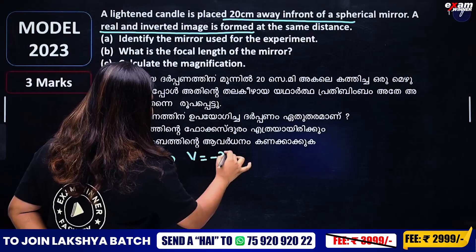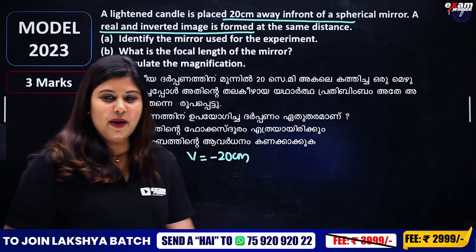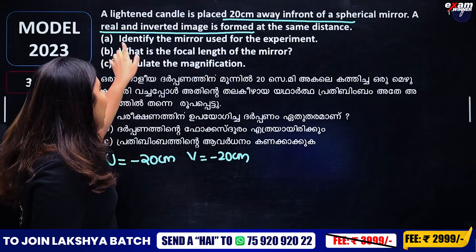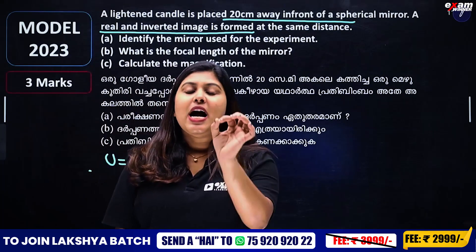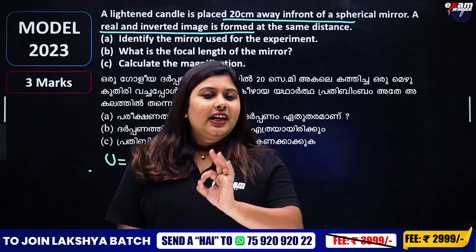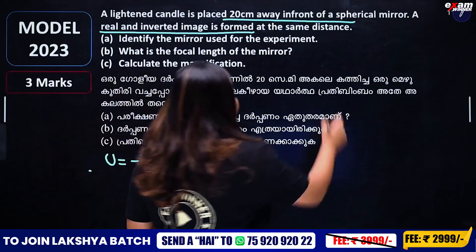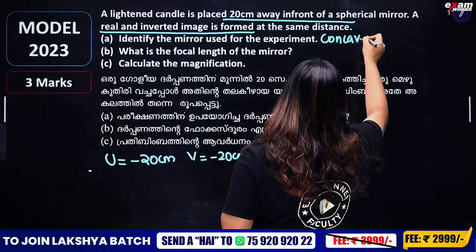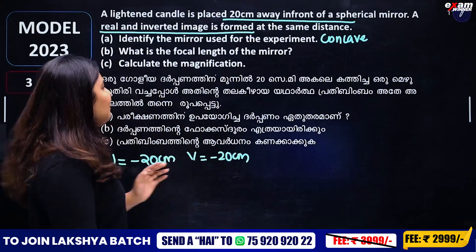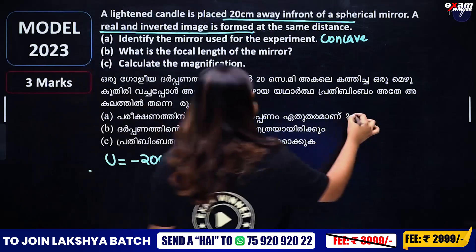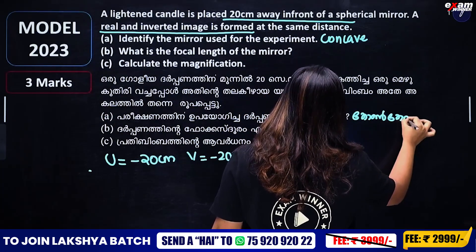The view is minus 20 centimeter. A real inverted image is formed at the same distance on the front. Then identify the mirror used in the experiment. It is a real image, so it is a concave mirror.